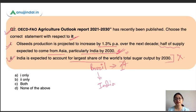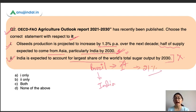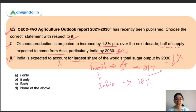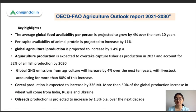The second statement says India is expected to account for the largest share of the world's total sugar output by 2030. However, this is incorrect — India would account for around 18% of the world's total sugar output by 2030, but it would not be the largest. So only the first statement is correct, making option A the correct answer.